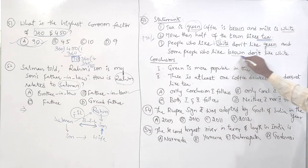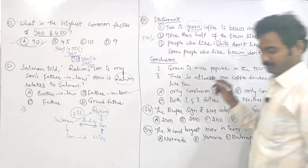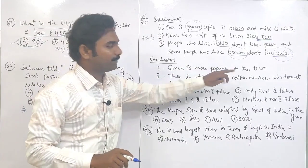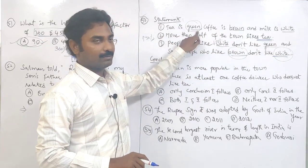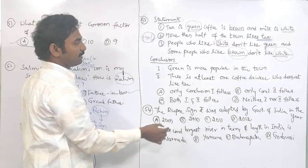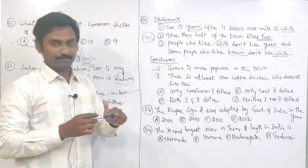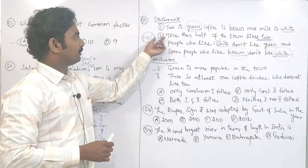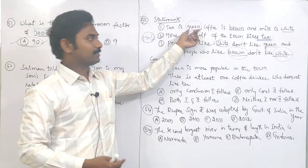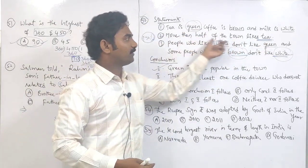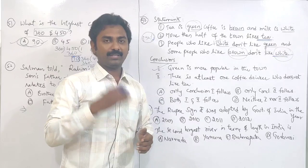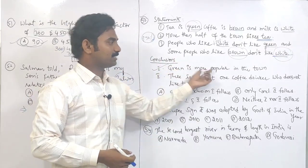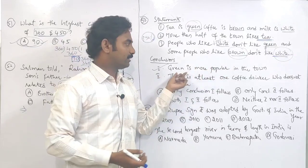And some people who like brown don't like white. Then what is the conclusion? Green is more popular in the town — more than half of the town likes tea and tea is green color, so green is liked by more than 50% of the population. That means green is more popular. Yes, the first conclusion is correct because more than 50% — say 60-70% — like green. So green is more popular in the town; first conclusion is correct.